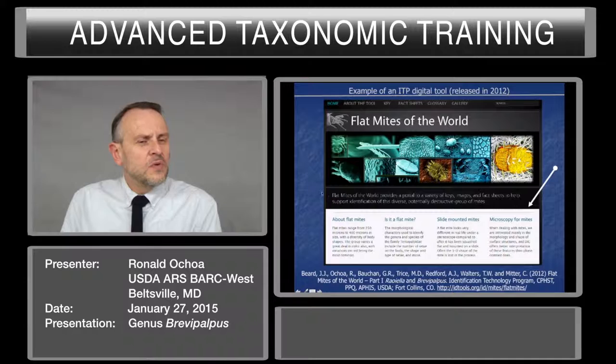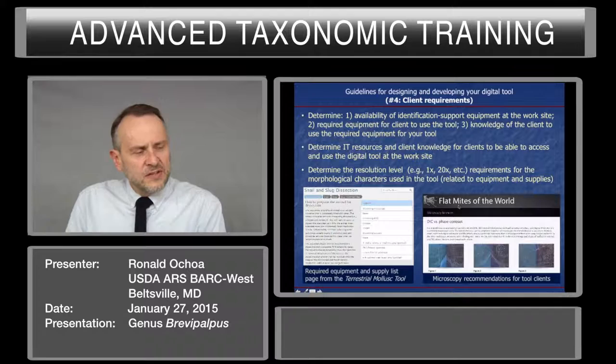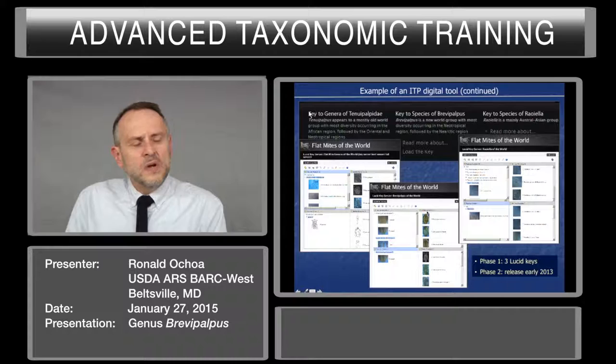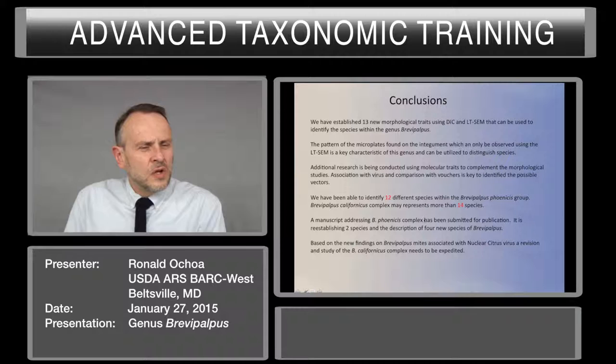All this information you can review at the Flatmites of the World website. Over there you will have different windows where you can go over the main characters of not only the family Tenuipalpidae but also in detail over Brevipalpus. You can compare and see the advantages of using phase contrast and DIC to study these mites. You will also have a Lucid key that you can use freely to identify the species and go over these variations.